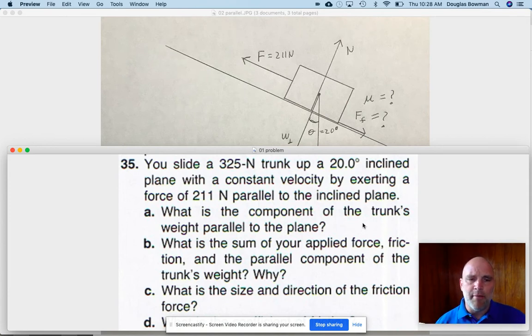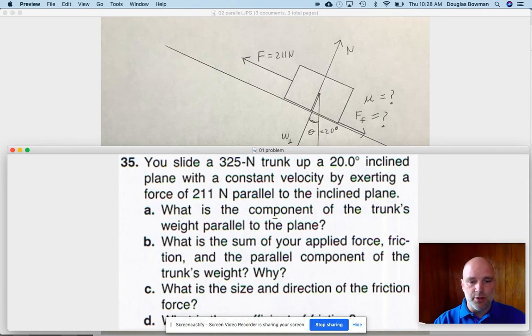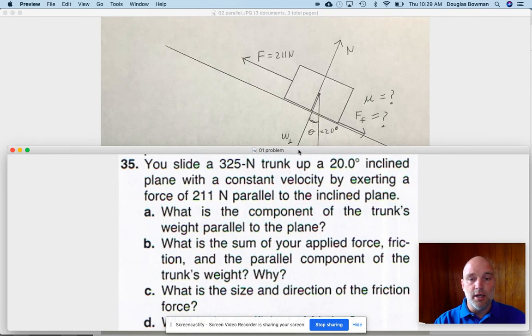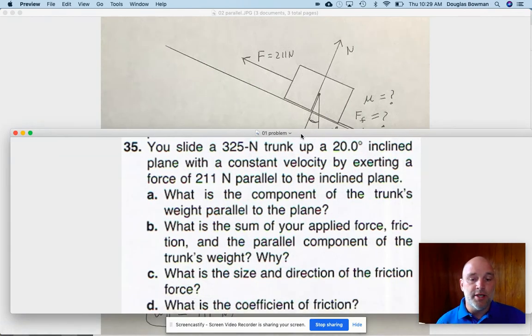And then it walked you through step by step. Part A is finding the parallel component of the weight. Part B, we're adding up the forces in the parallel direction in order to find the size of the friction force. And then letter D here is what is the coefficient of friction? So let's take these one at a time.